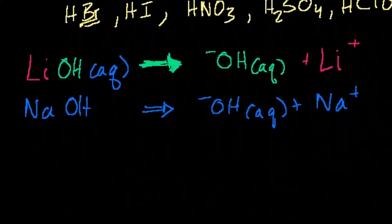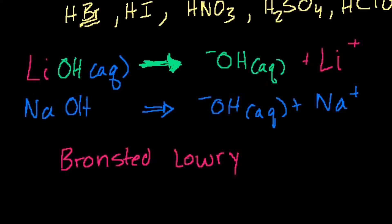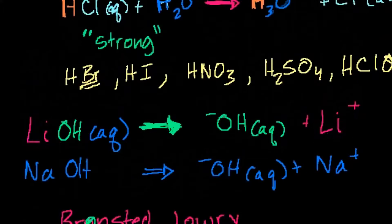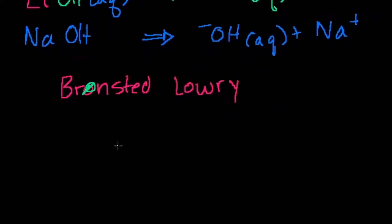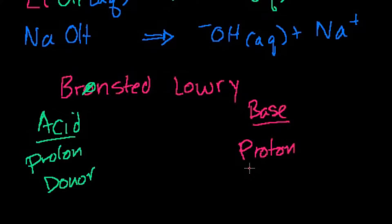There's a slightly broader definition: the Brønsted-Lowry acid or base definition. All Arrhenius acids and bases would also be Brønsted-Lowry, but the definition is broader: an acid is a proton donor, and a base is a proton acceptor.